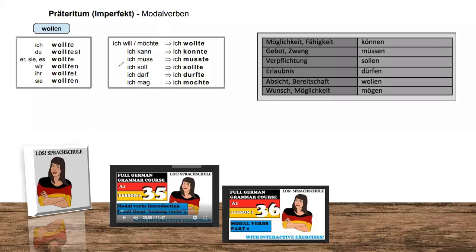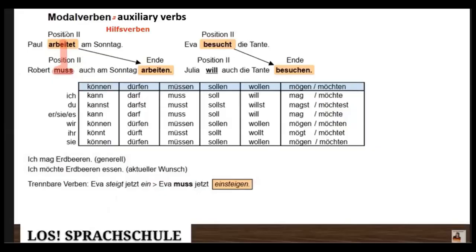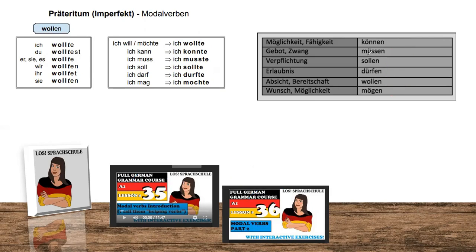We also need to talk about how we use these modal verbs and what they mean. If you're not familiar with that, you can watch lessons 35 and 36 of my A1 course — I explain it in detail. To recap: 'können' = possibility/ability; 'müssen' = urge, rule, higher power you must follow; 'sollen' = duty; 'dürfen' = permission; 'wollen' = intention or willingness; 'mögen' = wish or possibility. Now we know how to build the past form and when to use it.